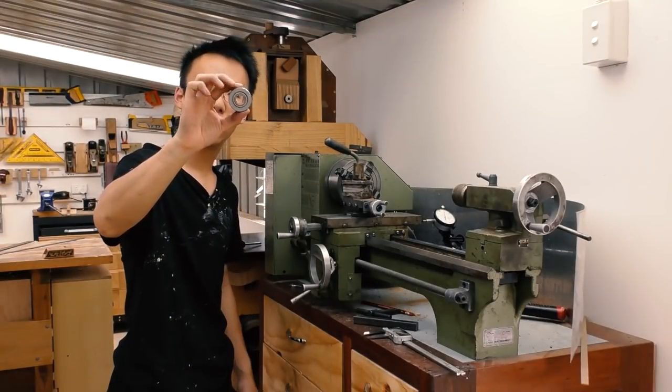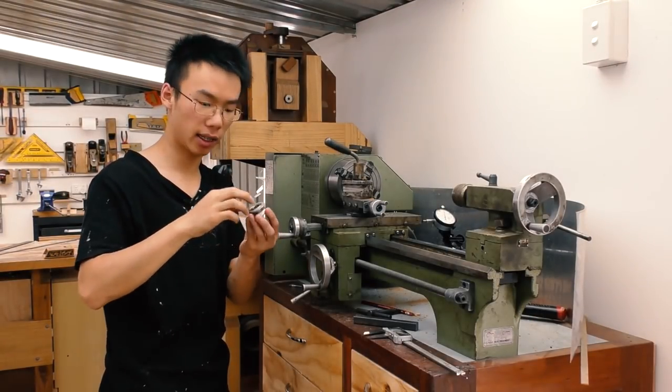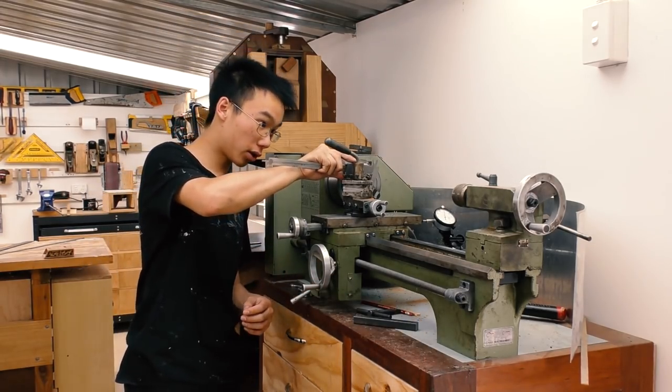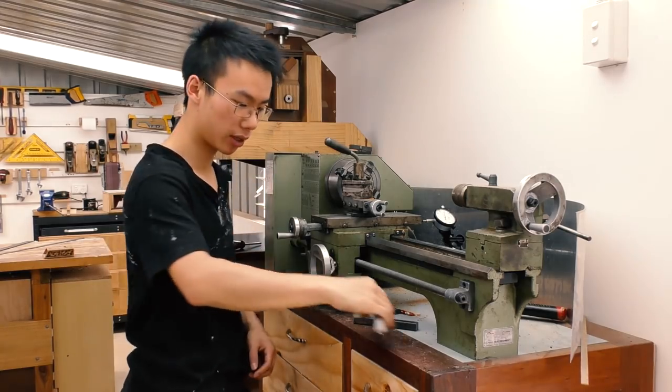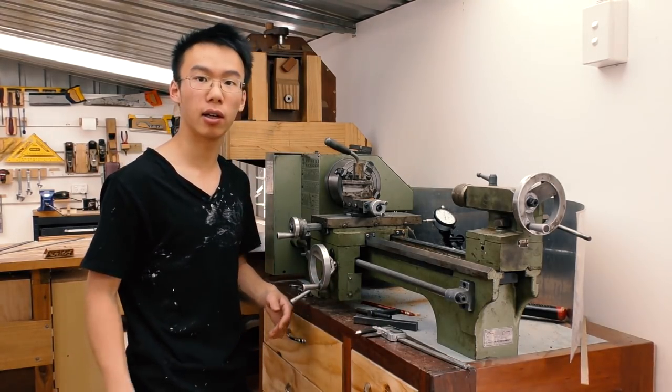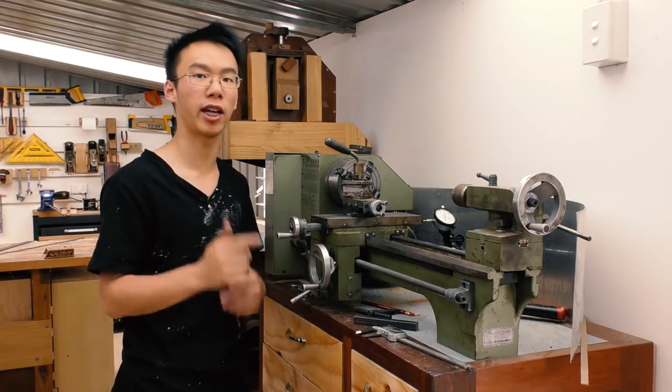This is the bearing that I'm trying to fit, and it has an inner diameter of 12 millimeters. At this stage, my stock is only about 16.0, so I've still got 4mm to reduce in diameter, which means I need to go a further 2mm in radius.